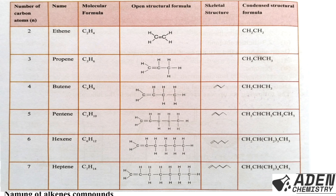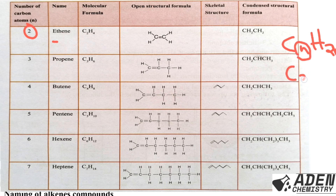To write the molecular formula for ethene, we use the general formula CnH2n where n is the number of carbon atoms. For ethene, n equals 2, so it will be C2H(2×2) = C2H4. For propene, n equals 3, so it will be C3H(2×3) = C3H6.